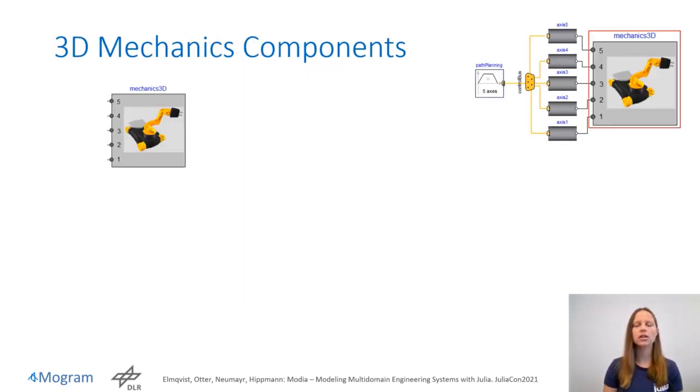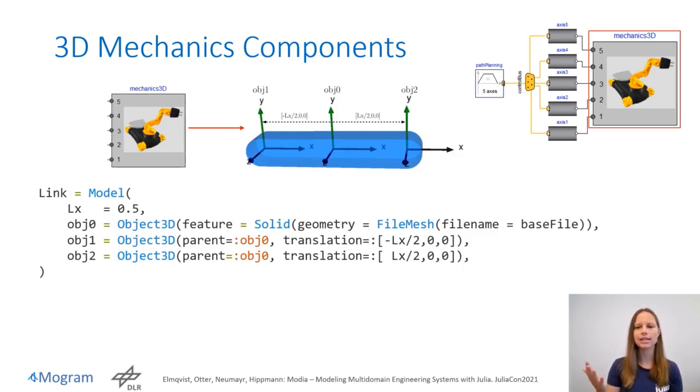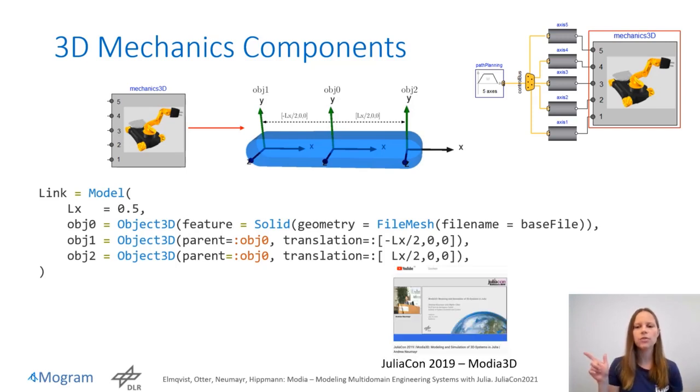A robot consists of several links. And each link is composed of three object 3Ds. The first one defines the physical behavior, which means it's a solid geometry. And the two others are needed for connecting those links. If you want to learn more about 3D modeling, please have a look at JuliaCon 2019 talk about Modja 3D.